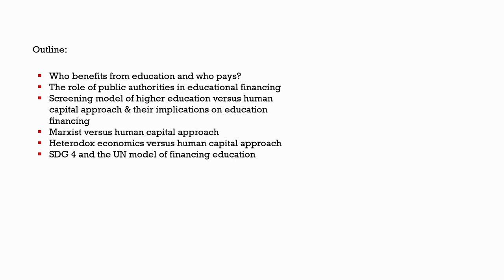There are two important frameworks. One is the screening model of higher education and the other is the human capital approach. We will look at the differences between the screening model, which informs us about how education financing should take place, versus the human capital approach, and see what are their implications in education financing. Within the larger context of human capital approach there is also a discussion with respect to the Marxist approach of education financing, and we will highlight important differences with regard to the state's role. We will also look at the heterodox economics approach versus the human capital approach, and end with SDG 4 and the UN model of financing education.